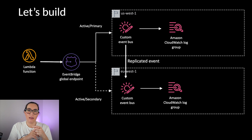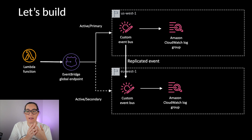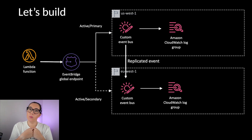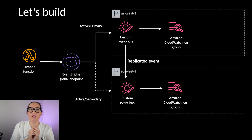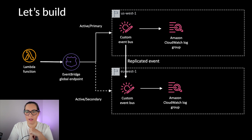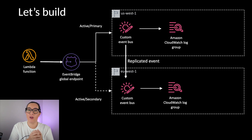Each stack has an event bus and a log group. The event will put events into the log group and write an entry indicating from which region the event was received. If the event comes from the primary region, it will appear in the log group as coming from US West 1. If it is coming from the secondary region because we are in failover mode, it will show Ireland.